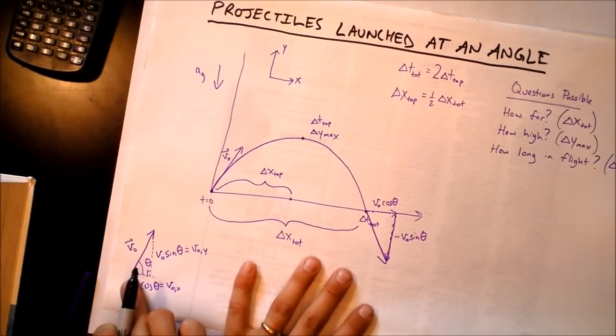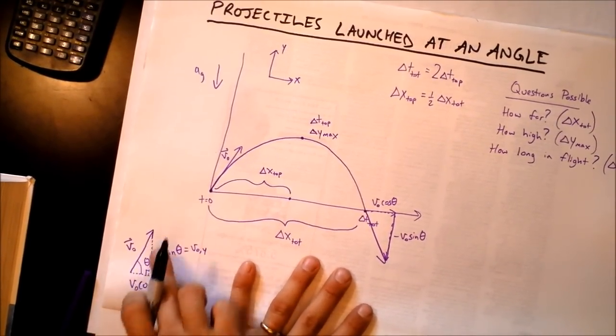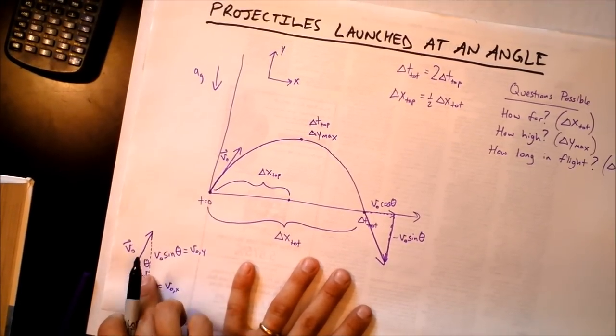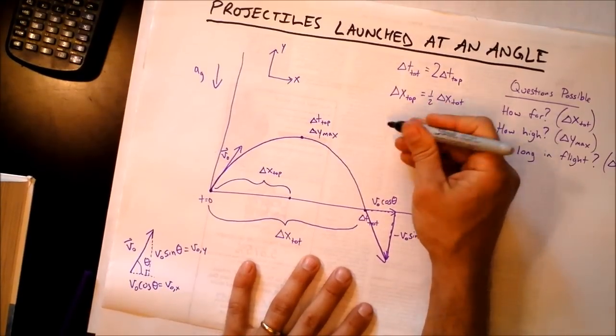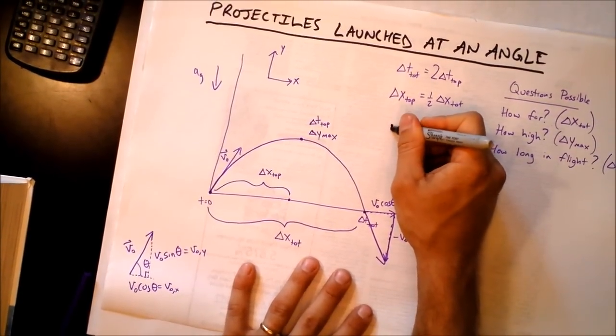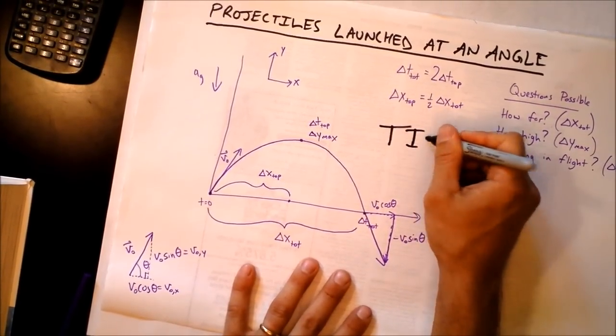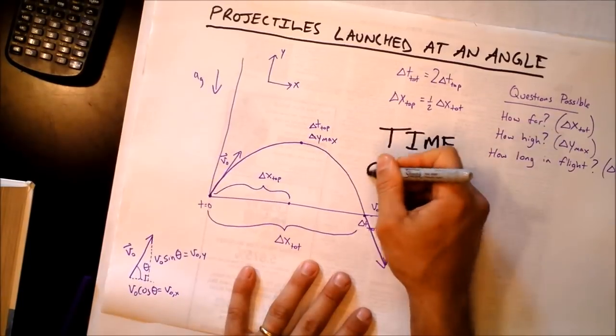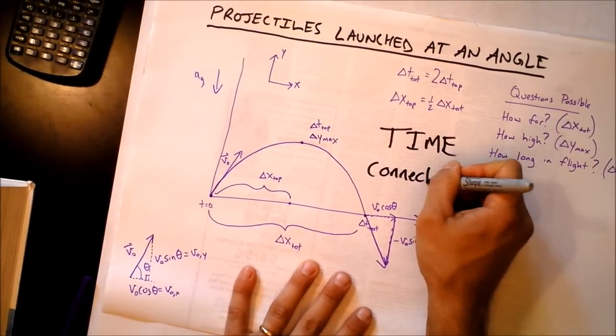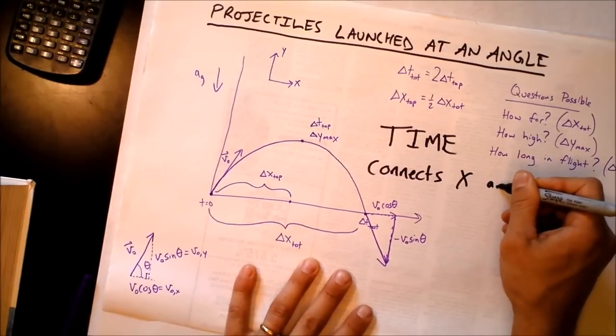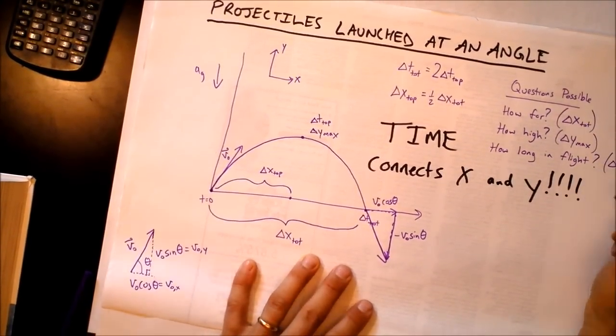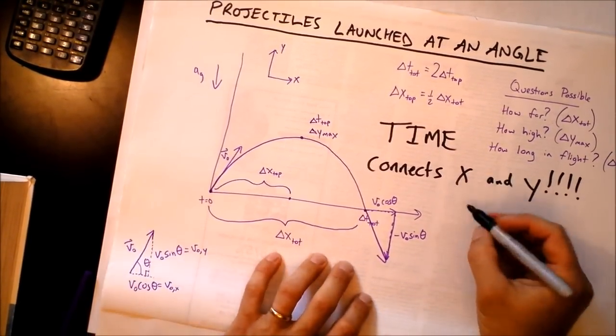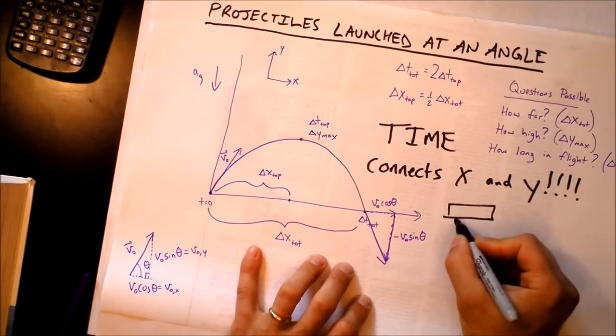They may tell you the range for instance and the launch angle, and you can use those to figure out the initial velocity's x component and then reconstruct the initial velocity's y component and use that to find the height. So the key fact that I want to tell you is that time connects x and y, and that's worthy of four exclamation points and probably even a flower pot.